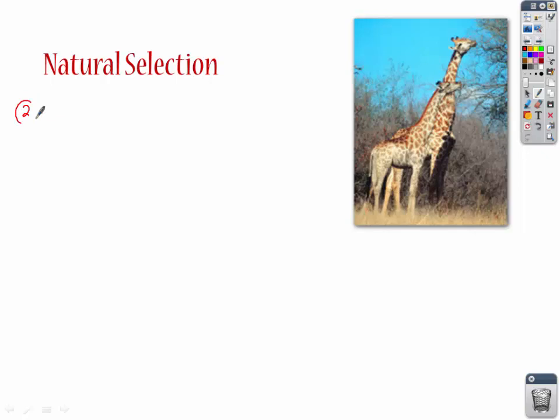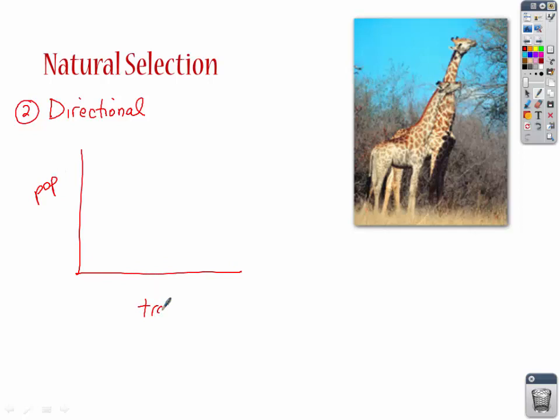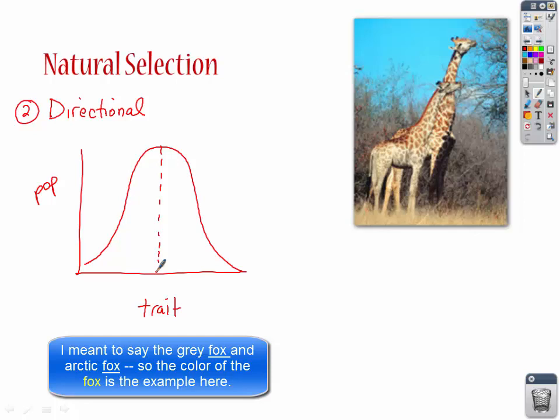Let's take a look at the next type of natural selection, and that's called directional. We'll draw a quick graph with population and trait axes. In directional selection, for some reason, one half of the trait range is now not beneficial for the species. Let's take, for example, the gray wolf versus the arctic fox.